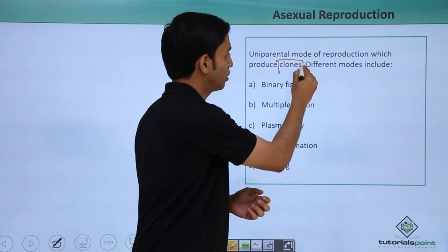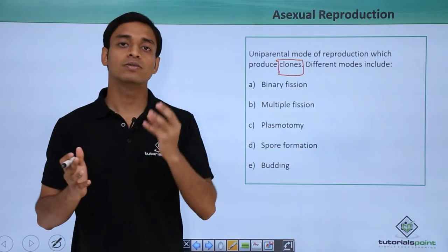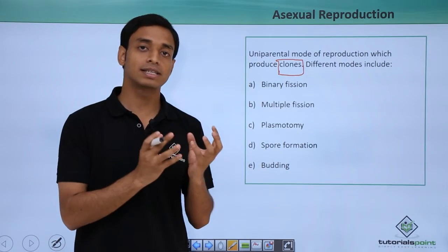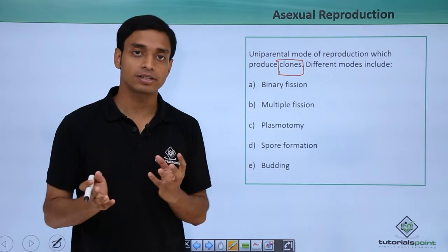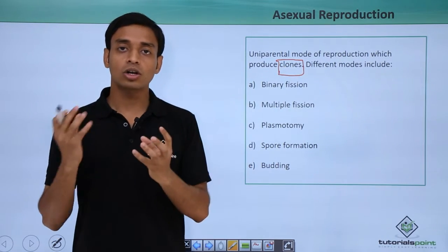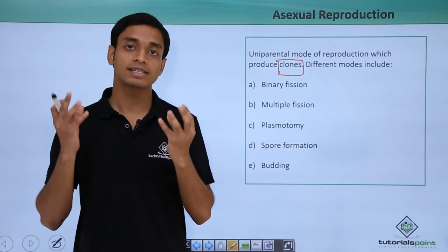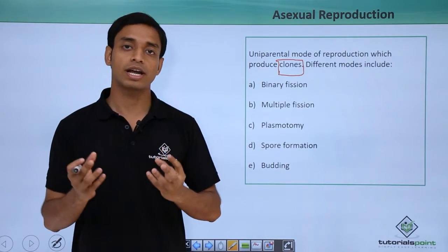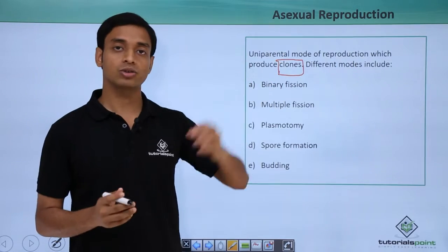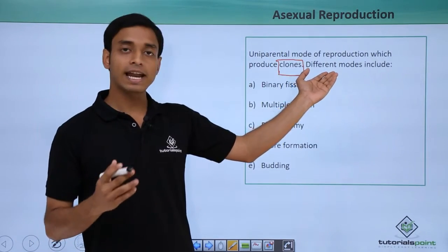Very importantly, this type of reproduction produces clones — exact copies which are similar or exactly the same as the parents. The daughter organisms and the parents do not have any difference; they are the same type of organisms, produced only by asexual reproduction.